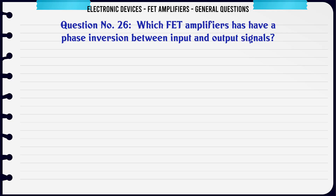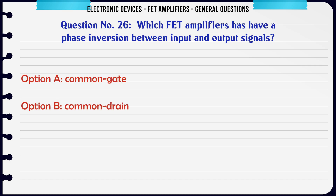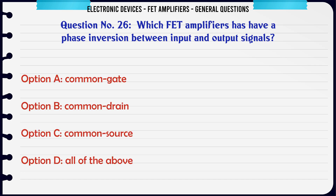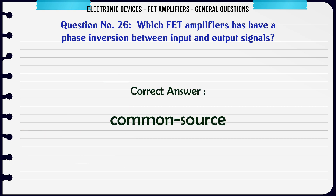Which FET amplifier(s) has/have a phase inversion between input and output signals? A. Common gate. B. Common drain. C. Common source. D. All of the above. The correct answer is Common source.